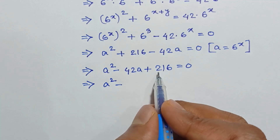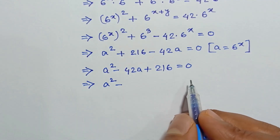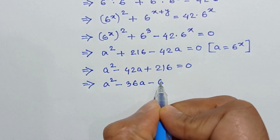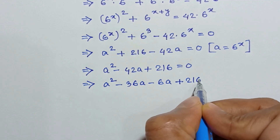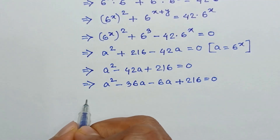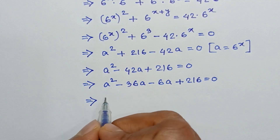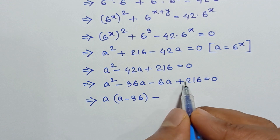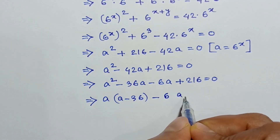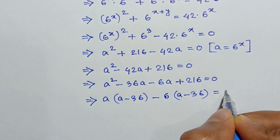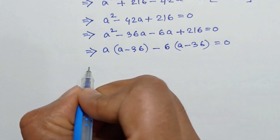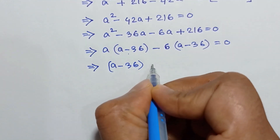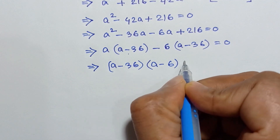Since 216 is equal to 6 times 36 and 6 plus 36 is equal to 42, we can factor: a squared minus 36a minus 6a plus 216 is equal to 0. Taking a common from the first two terms and 6 common from the last two terms, we get a times a minus 36 minus 6 times a minus 36 is equal to 0. Taking a minus 36 common, we write a minus 36 times a minus 6 is equal to 0.